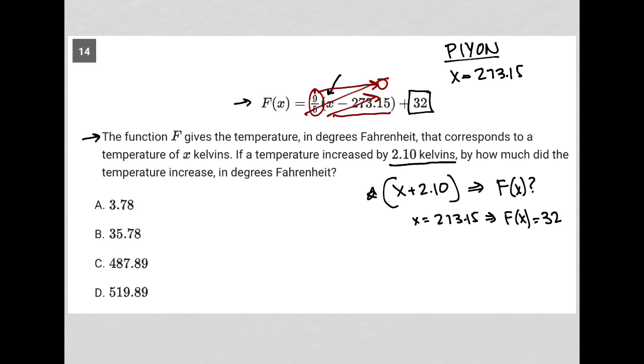Now I'm going to apply this. So x plus 2.10, well, the x that I used was 273.15. So my new x would be 275.25, just this value plus the 2.10.